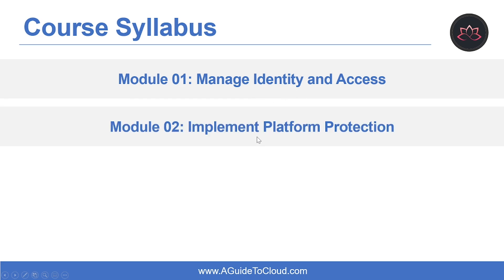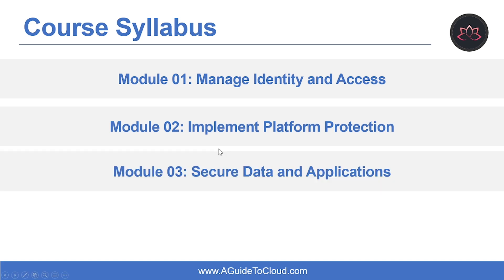The second module covers perimeter security and network security, how you can implement host security, and how you can protect your containers with container security. The third module is where you'll learn about Key Vault, App Security, Storage Security, and Database Security.